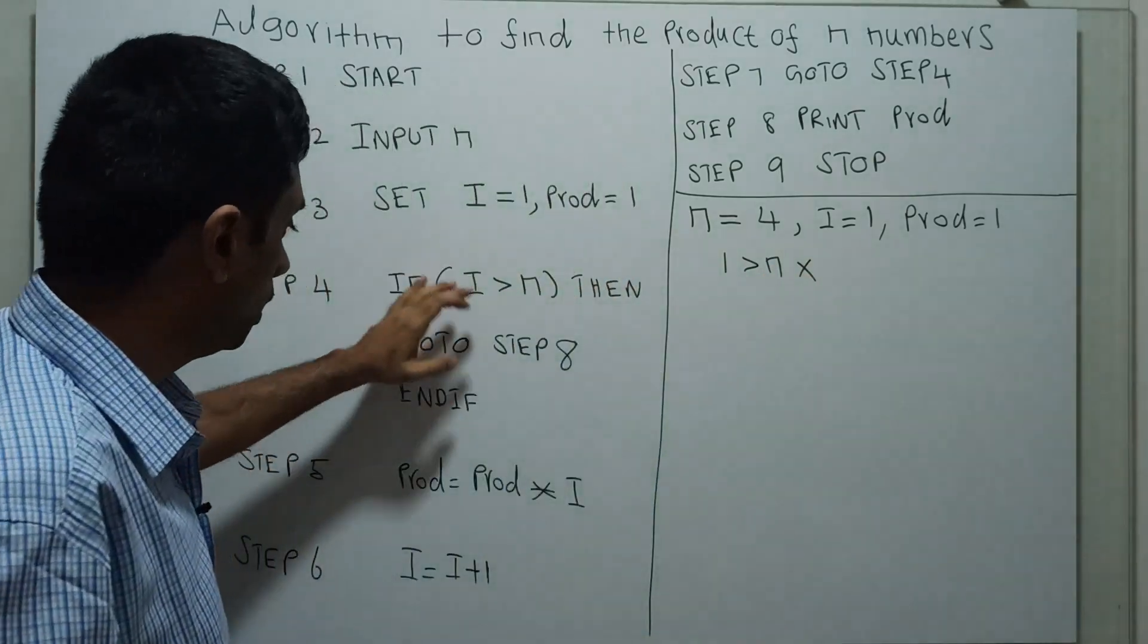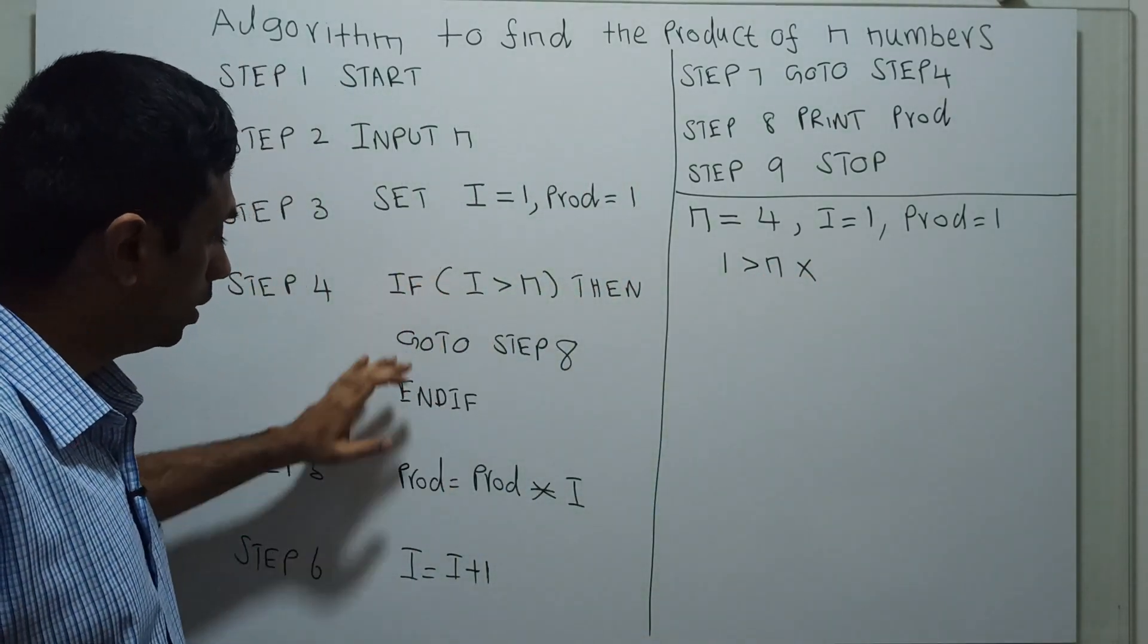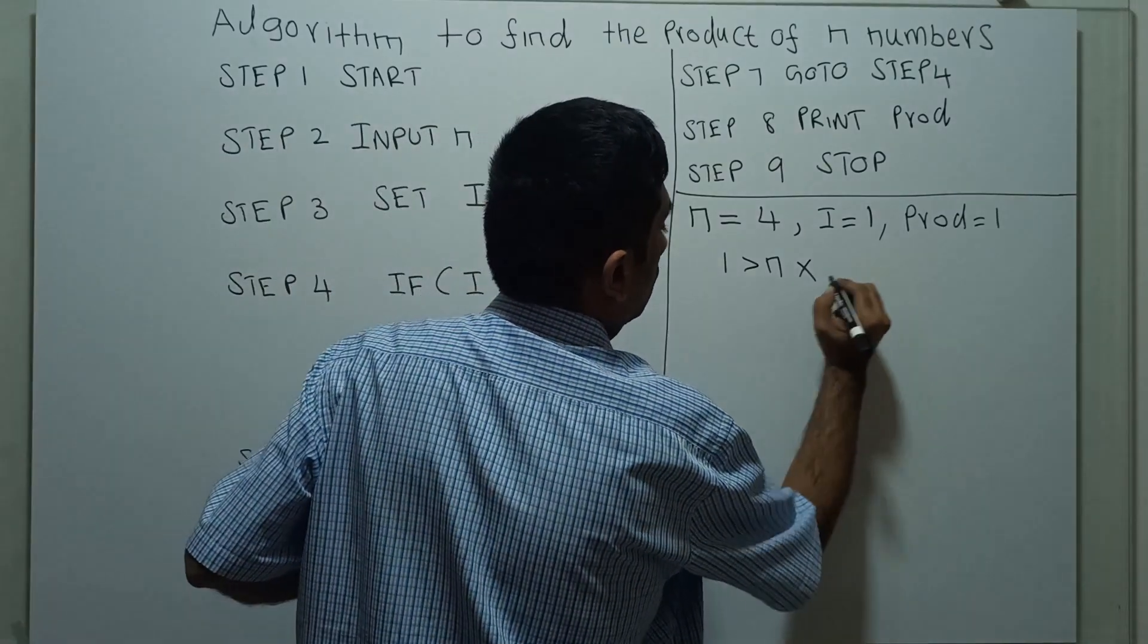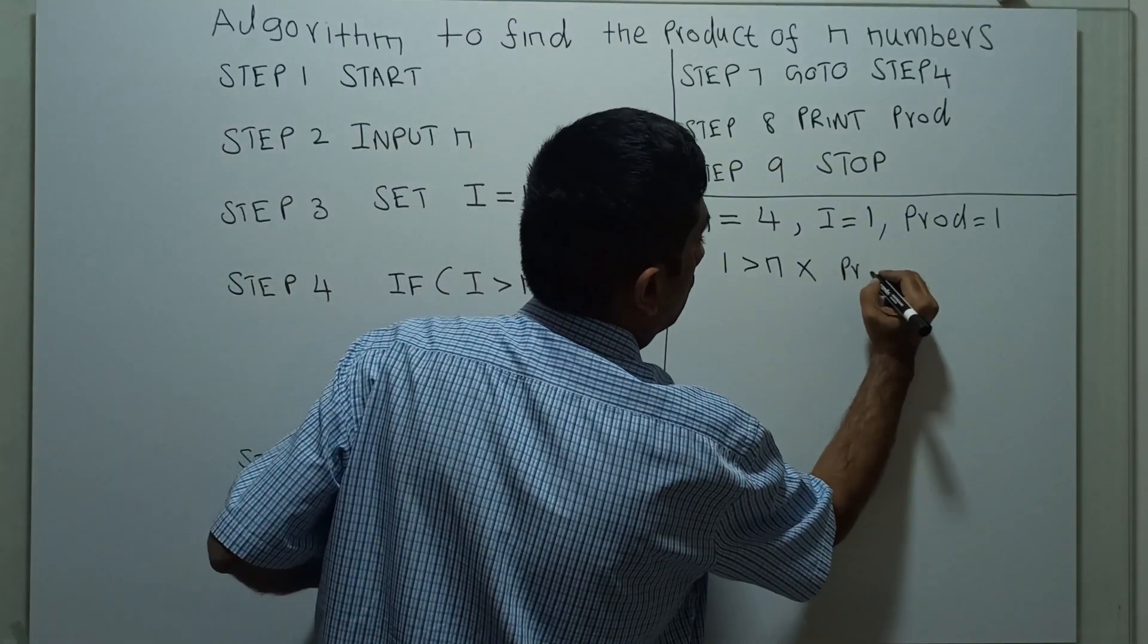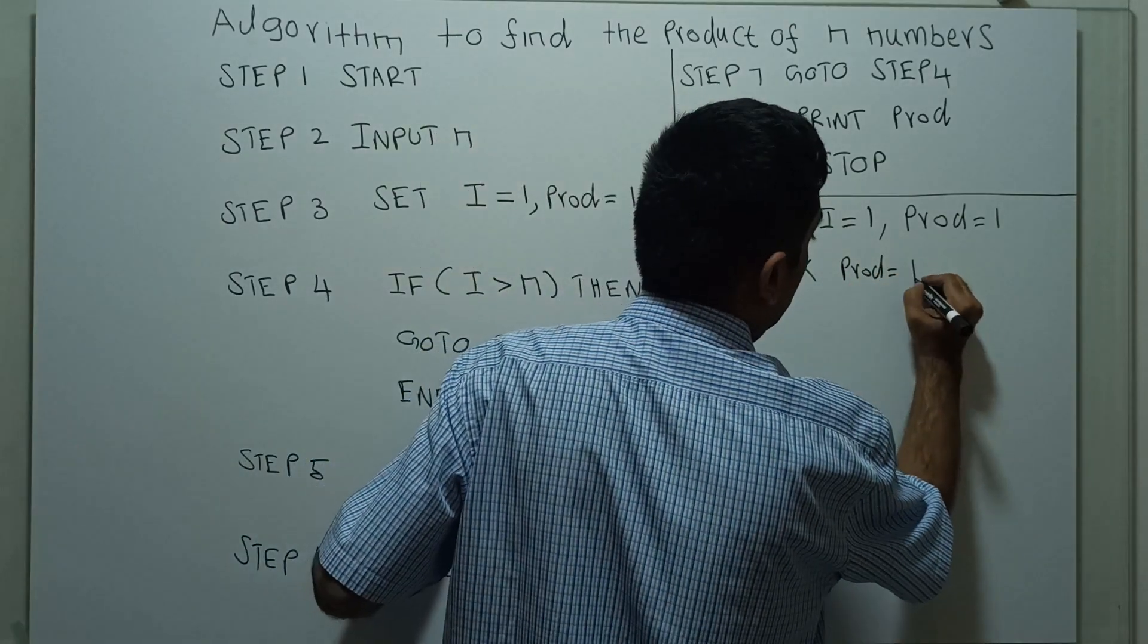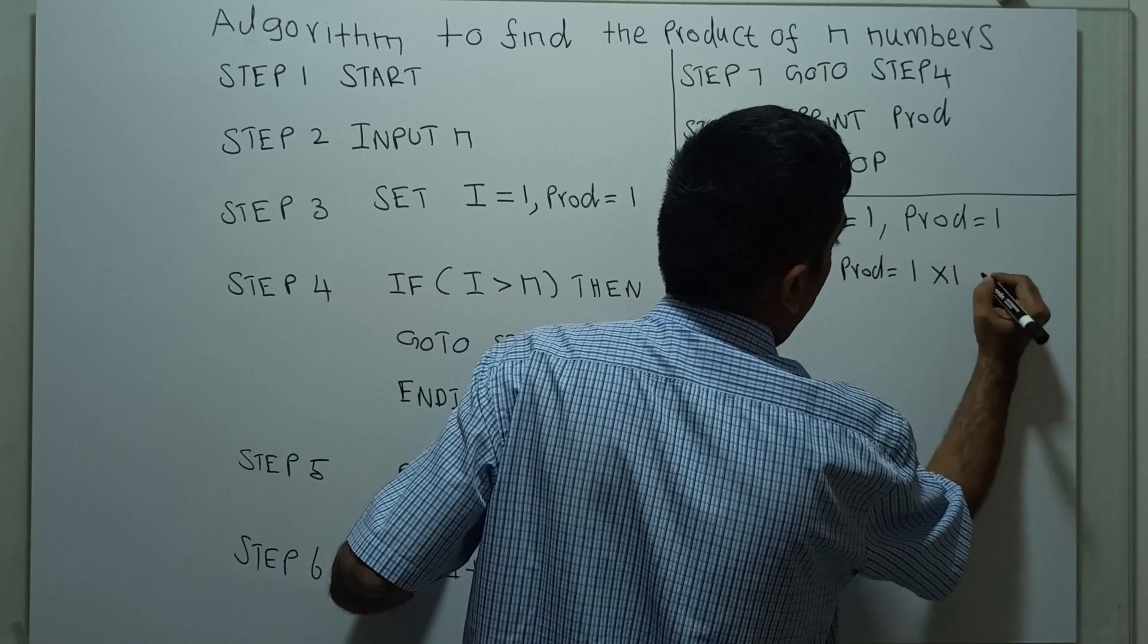false, so control goes inside the statement. Product equals product times i. The value of product: 1 times 1, which equals 1.